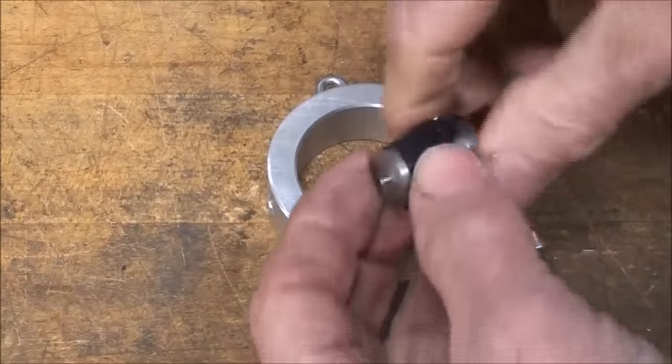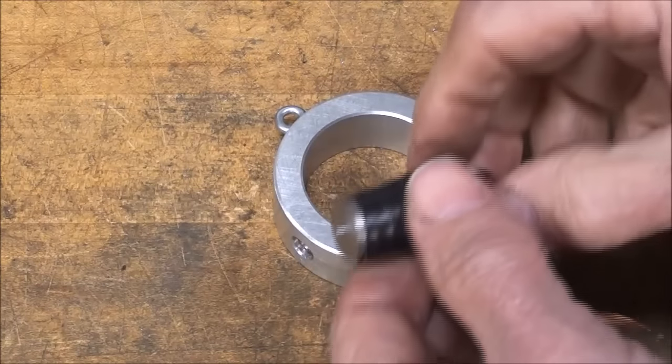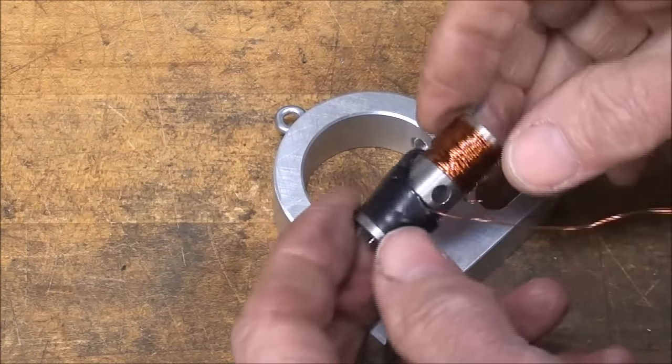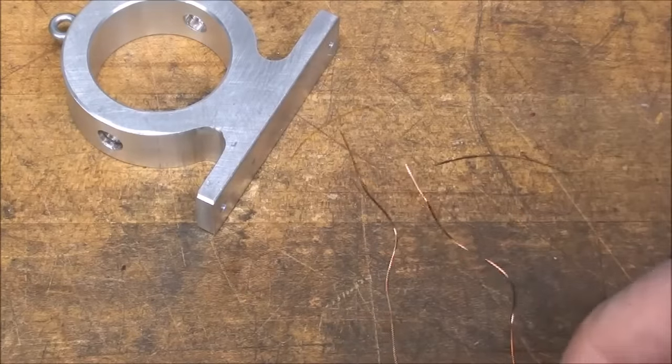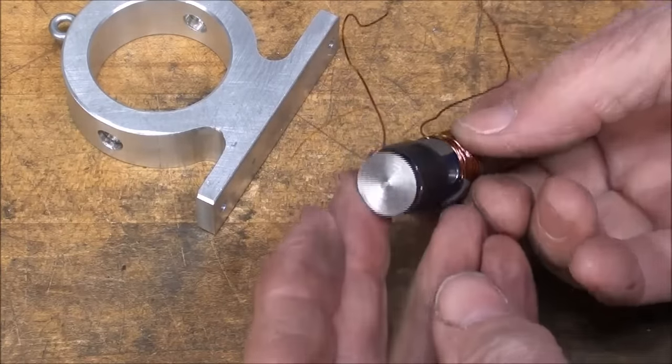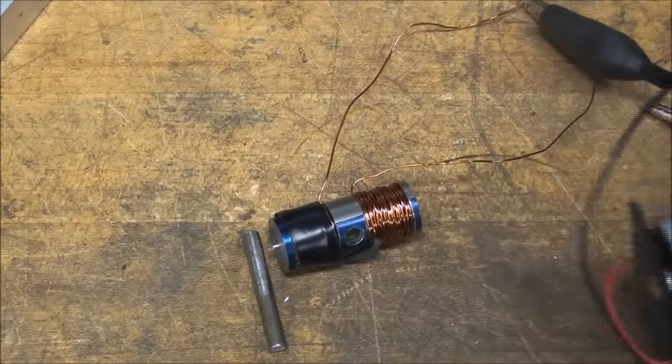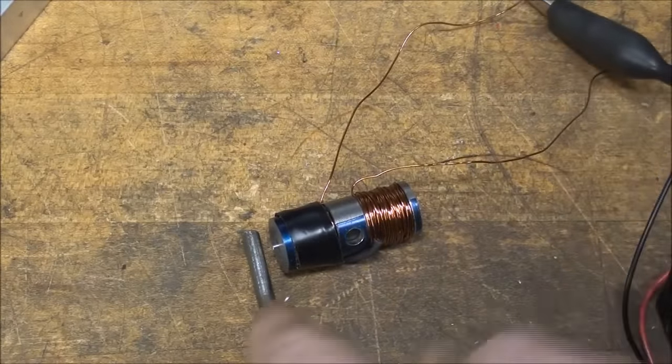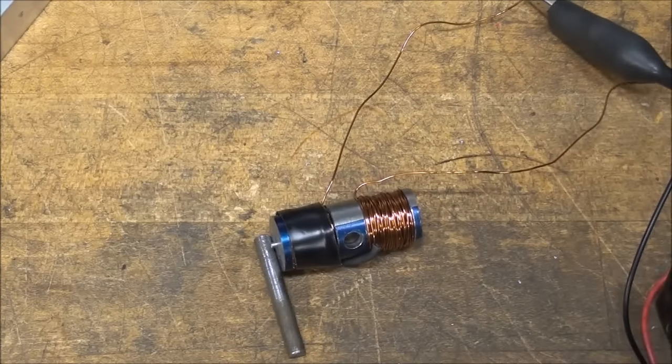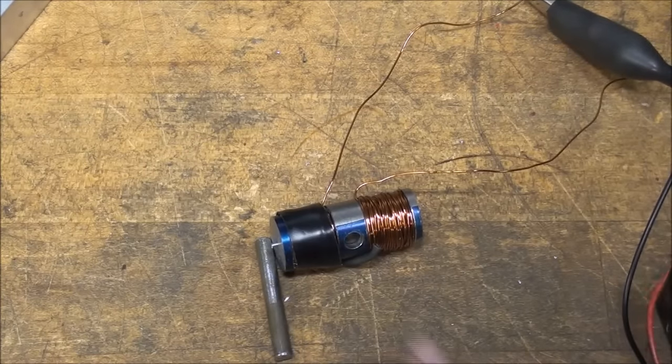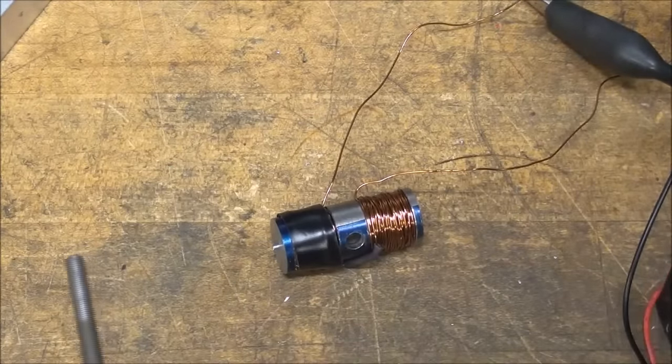Of course it doesn't quite fit into the stator because there's no curvature, no radius on here yet. I'll show you how to do that in just a minute. But I've stripped the varnish off on the end here, so let's make a test to see if it has turned into a magnet. Got a couple double A batteries. Watch that little bar there. And it works.